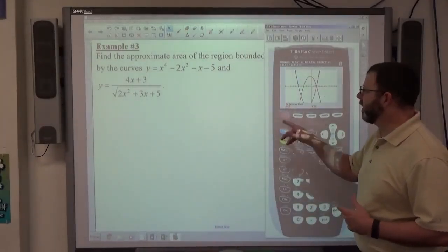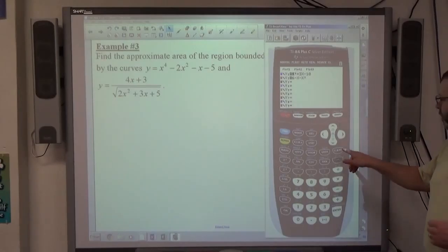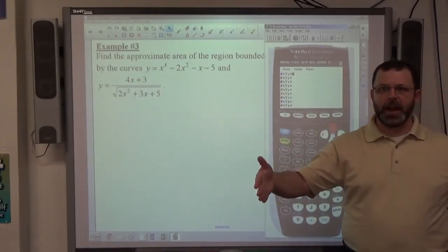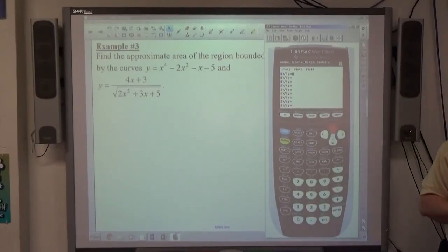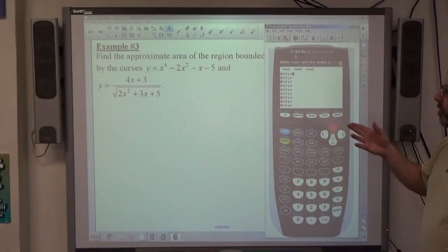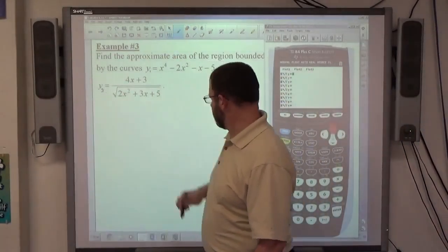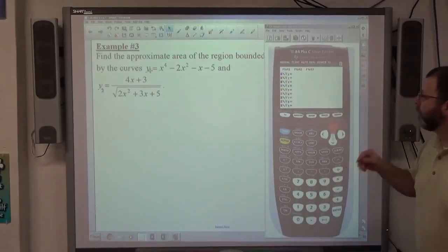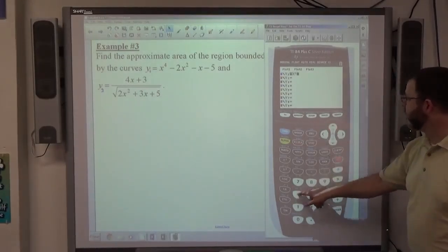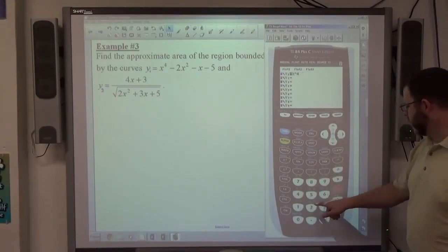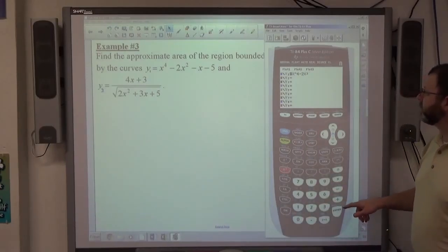Once again, my intention here is to figure out the top, the bottom, and the boundaries. And again, the fact that they don't say starting here and ending there for x, that just implies that the graphs themselves are going to intersect somewhere. So I'm going to start—I'm going to call this one y sub one, and this one y sub two. So I've got x to the fourth minus two x squared minus x minus five.